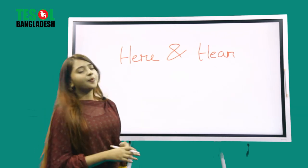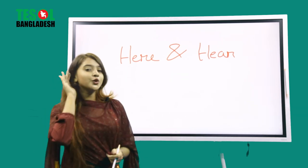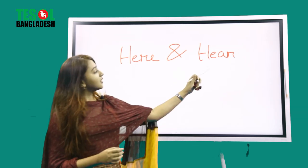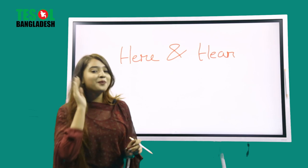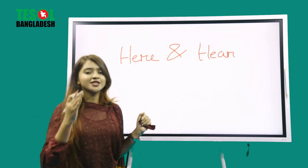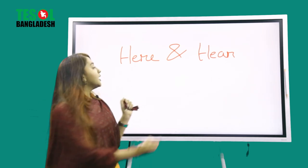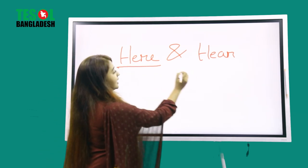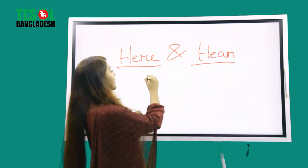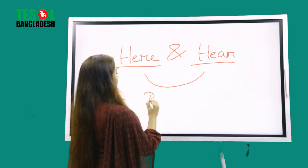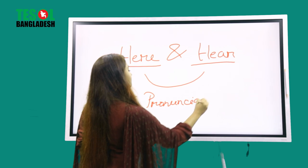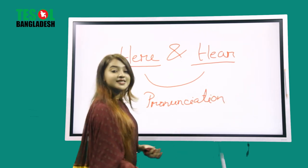For example: 'Can you come here?' and 'Can you hear me?' — 'Can you come here?' and 'Can you hear me?' One means asking someone to come to a place, and the other means asking if someone can hear you. Their spelling and meaning are totally different, but pronunciation is kinda same.